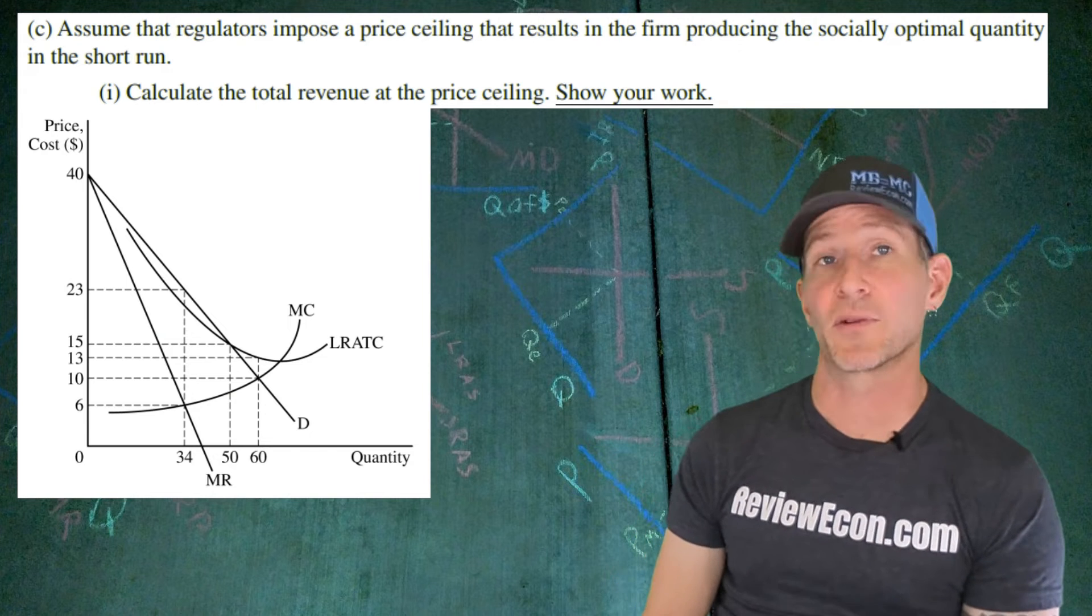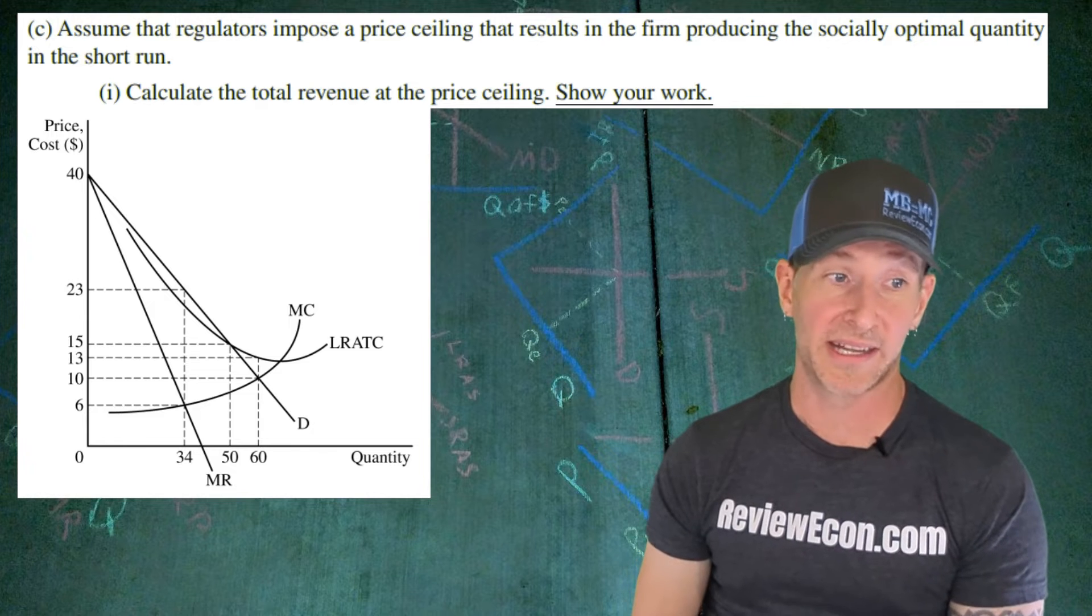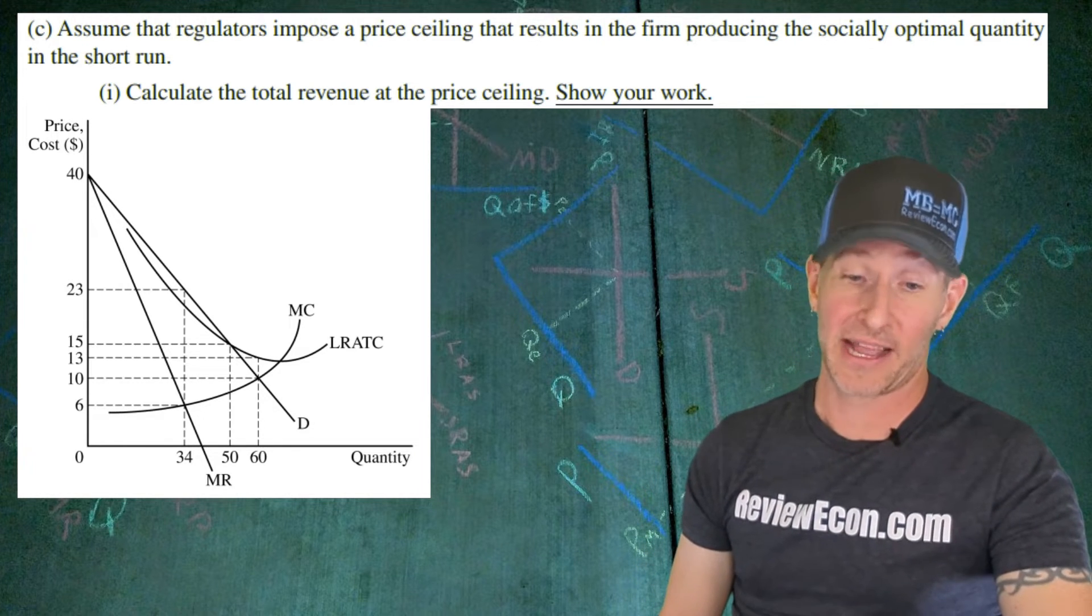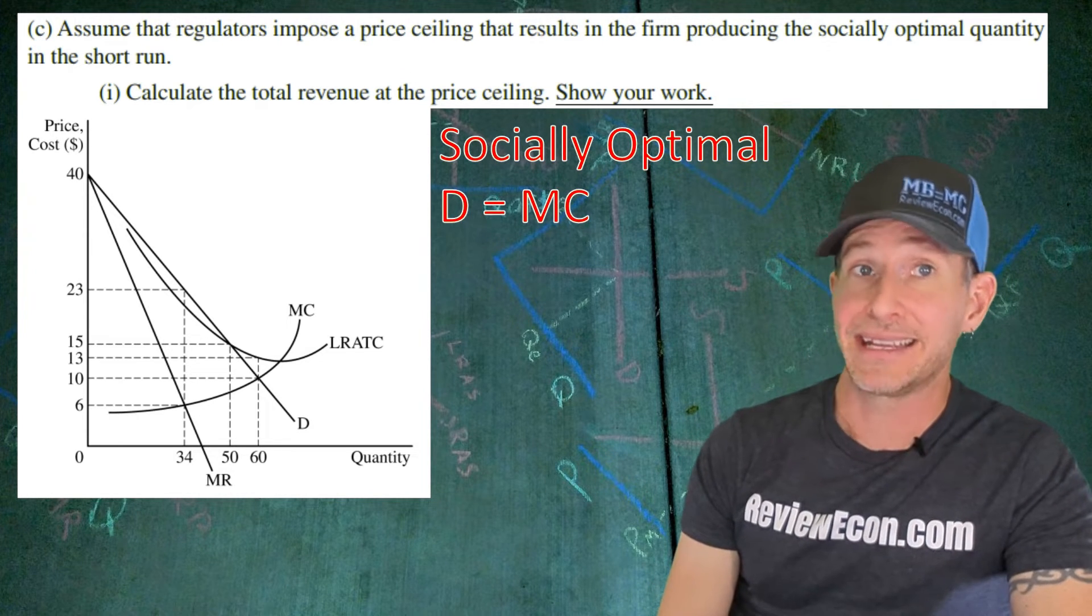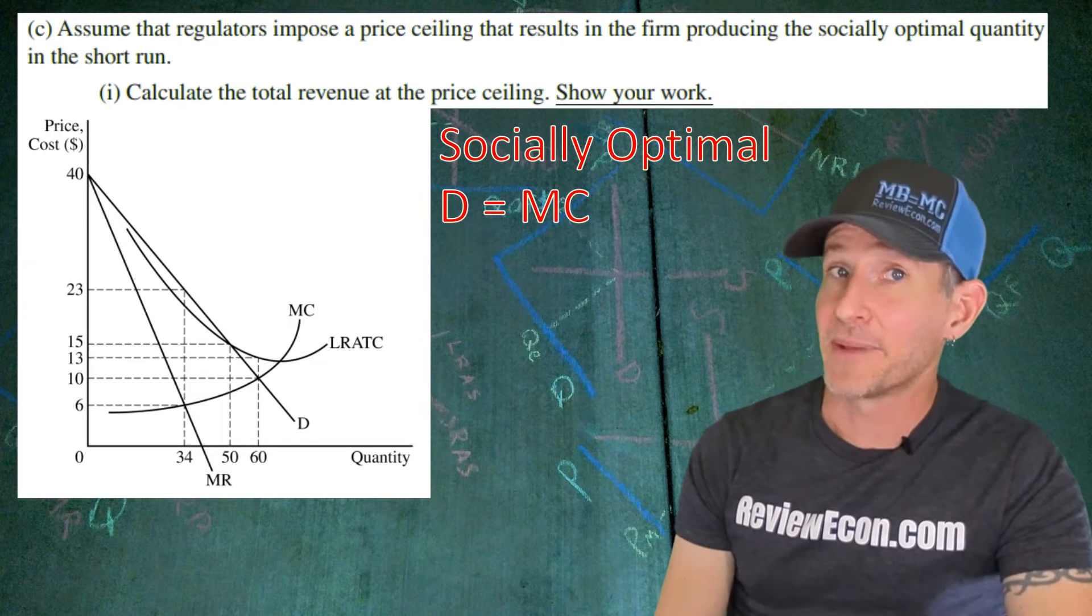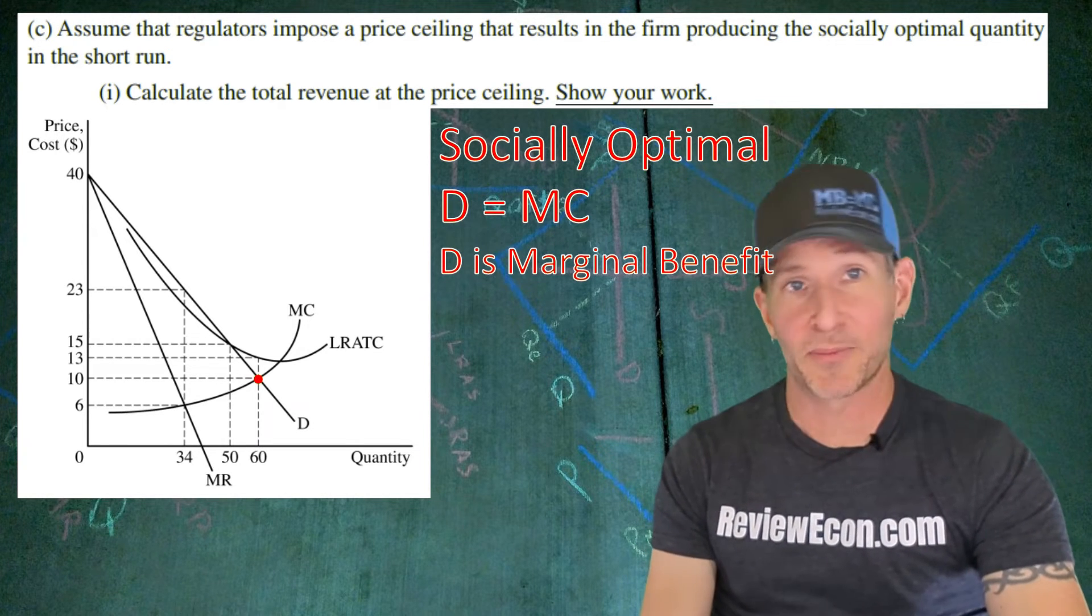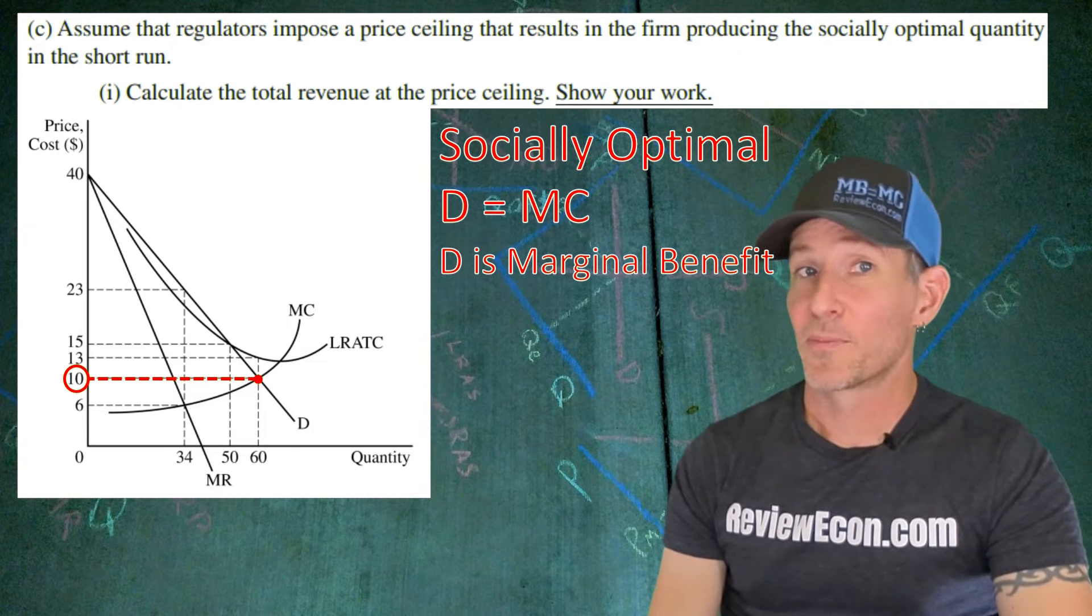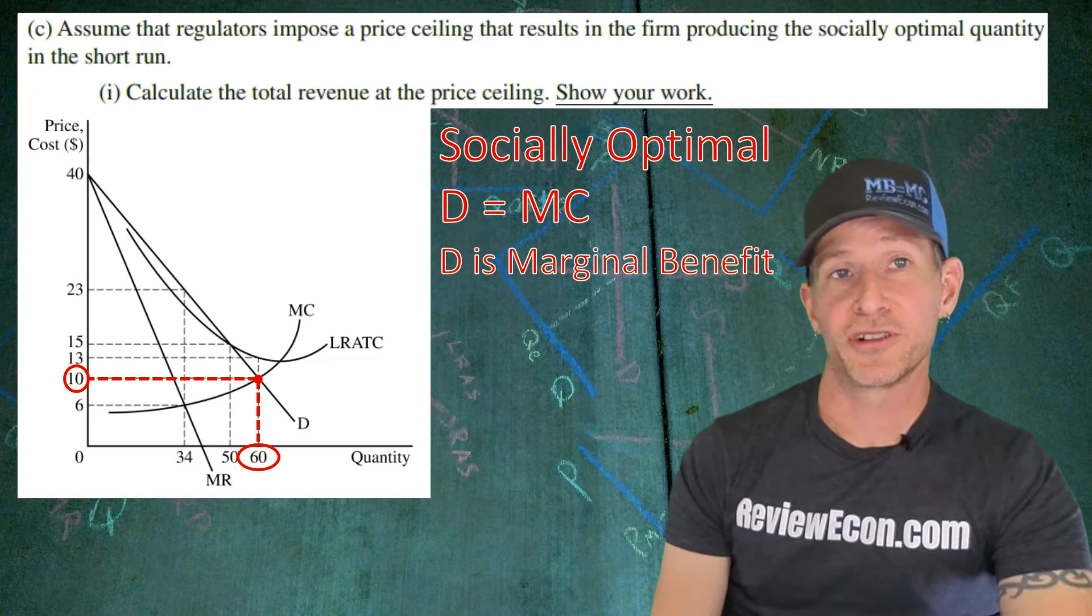For part C, we're going to assume that regulators impose a price ceiling that results in the firm producing the socially optimal quantity in the short run. We're going to calculate the total revenue at the price ceiling and show our work. The socially optimal quantity is found where demand equals marginal cost, because it's really where marginal benefit equals marginal cost, and demand is the marginal benefit curve. So there is our allocatively efficient or socially optimal point right there. Move on over to that y-axis and we see the price of $10. That's the price ceiling we're going to want. Drop down, we have a quantity produced of 60.